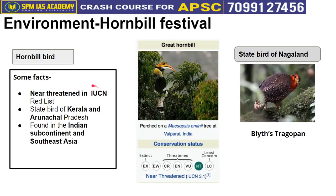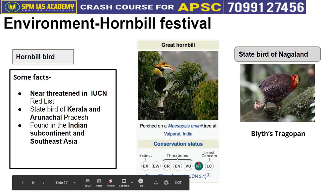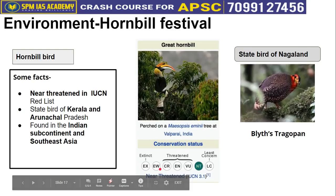The Hornbill bird is 'Near Threatened' on the IUCN Red List, so there is no extreme threat to it currently. To understand the IUCN classification: Least Concern refers to common animals like dogs, cats, cows whose existence faces no particular threat; then comes Near Threatened, Vulnerable, Endangered, Critically Endangered (most at risk); then Extinct in the Wild (only surviving under human protection in zoos); and finally Extinct, like dinosaurs, which are gone everywhere. So the Hornbill bird is classified as Near Threatened — no major threat.